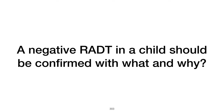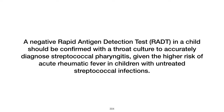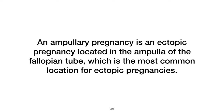A negative rapid antigen detection test (RADT) in a child should be confirmed with a throat culture, especially in settings where the prevalence of streptococcal infection is high, because the risk of acute rheumatic fever is significantly higher in children with untreated streptococcal pharyngitis than in adults. What is an ampullary pregnancy? An ampullary pregnancy is a type of ectopic pregnancy where the embryo implants in the ampulla of the fallopian tube, which is the most common site for ectopic pregnancies.